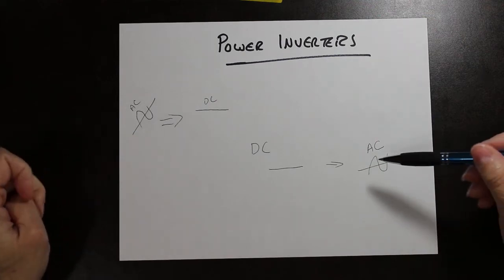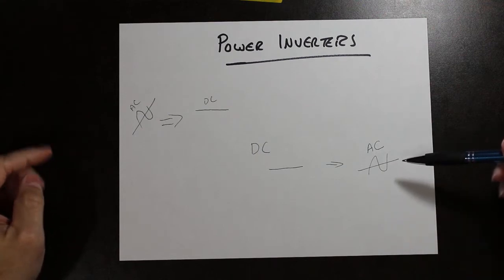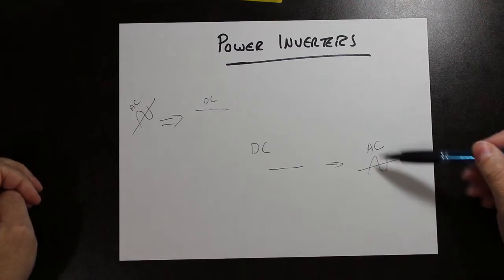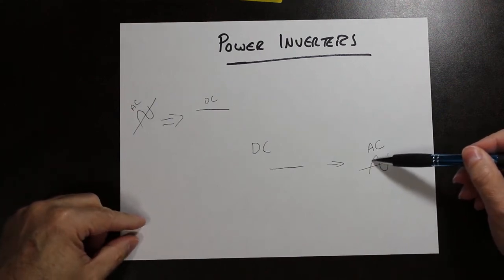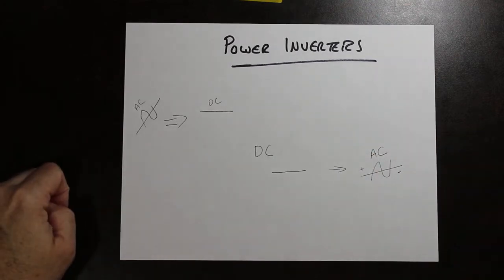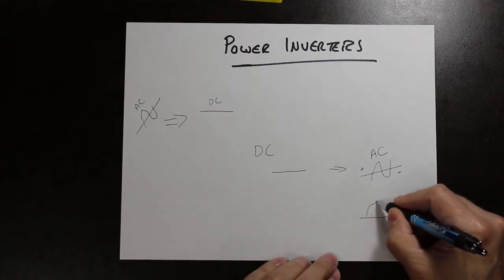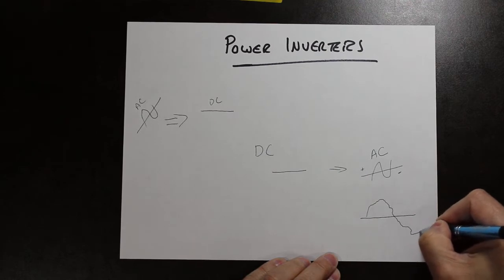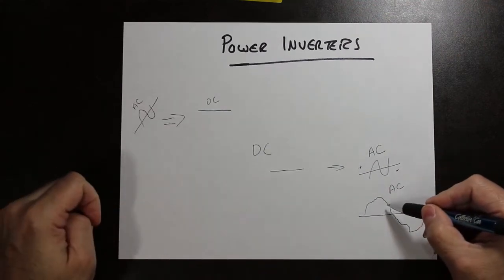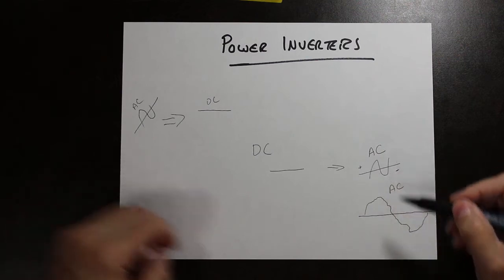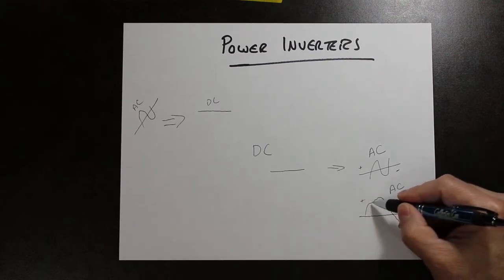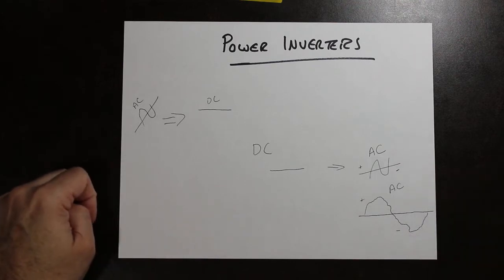Now remember, AC does not mean that it's a perfect sine wave. AC actually has nothing to do with the sine wave. AC stands for alternating current. That means current is flowing in one direction on the positive side, and then current switches over to the negative side. So even if I had something that kind of looked like this — which is kind of what we end up with in this lab — this is still AC. It's very crude, it's not a nice smooth sine wave, but it is still an AC signal. We have a positive where current is flowing in one direction, and then a negative where current is flowing in the opposite direction.